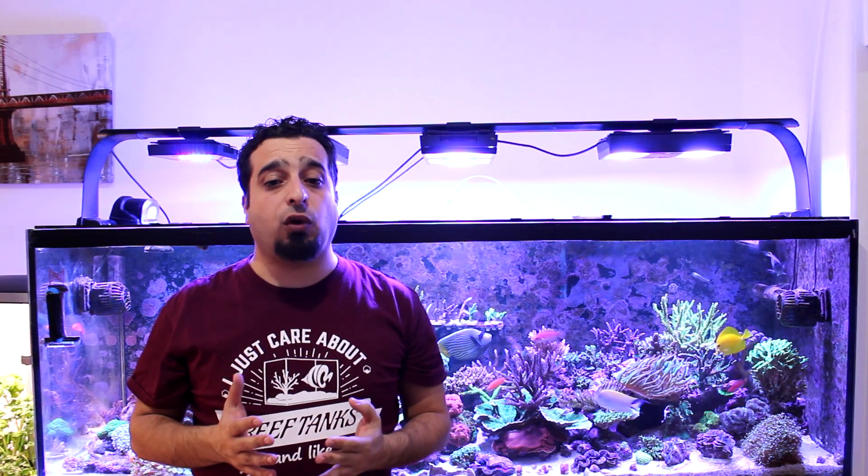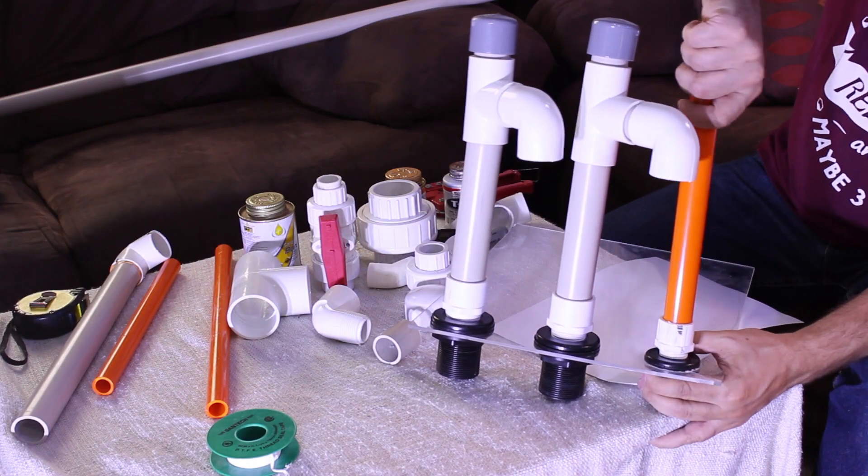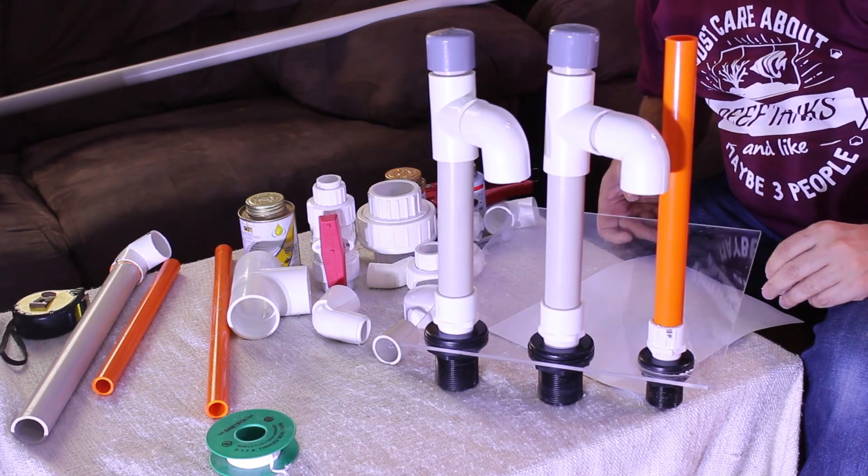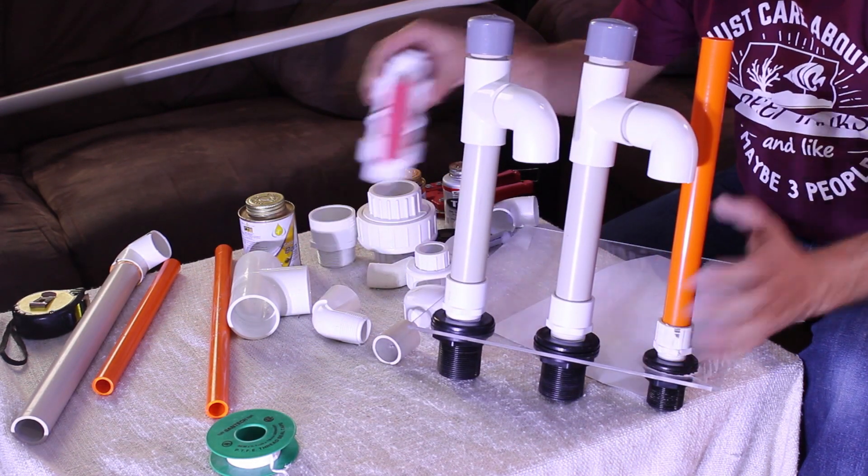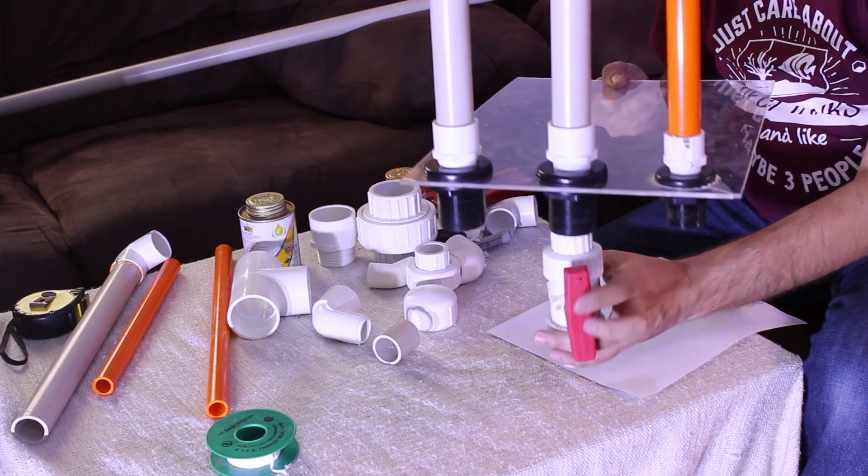The third option and my favorite is the Bean Animal overflow system. Bean Animal is an overflow system that combines Durso and Herbie in a single system. There are three standpipes: full siphon, open channel, and emergency standpipe. Full siphon and open channel are similar to each other with turned down elbows and caps with the same height.